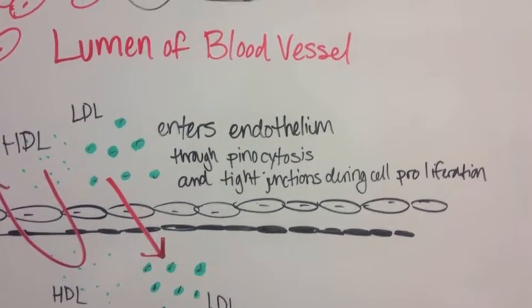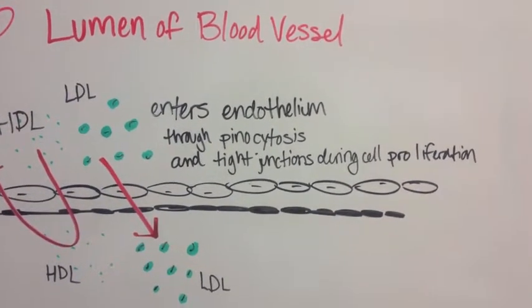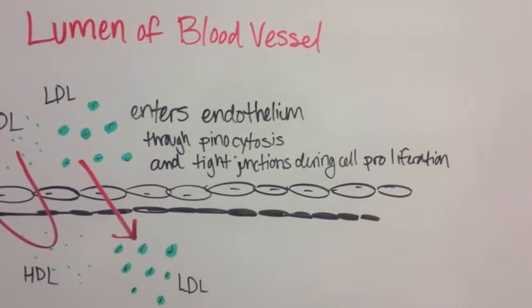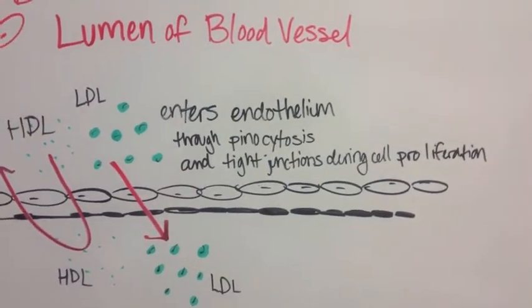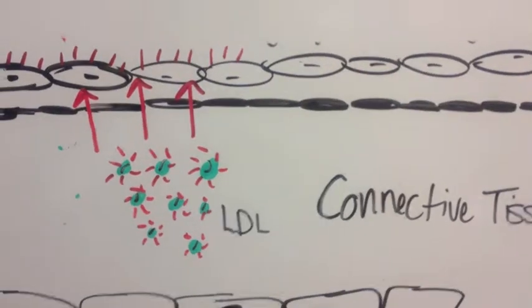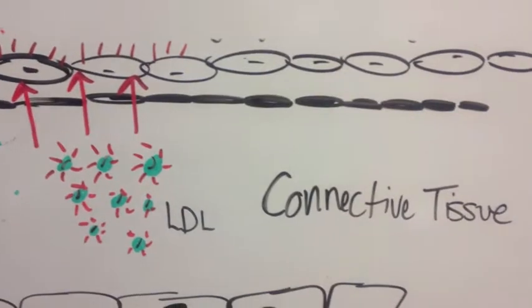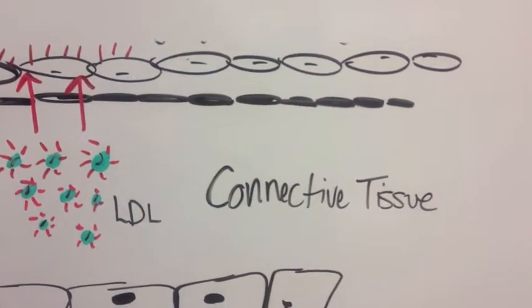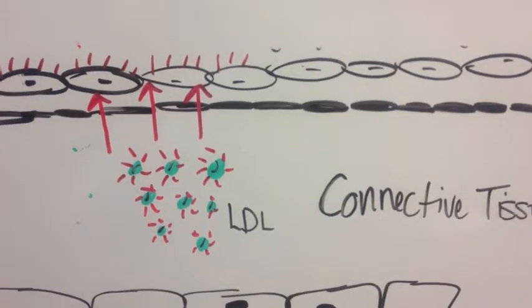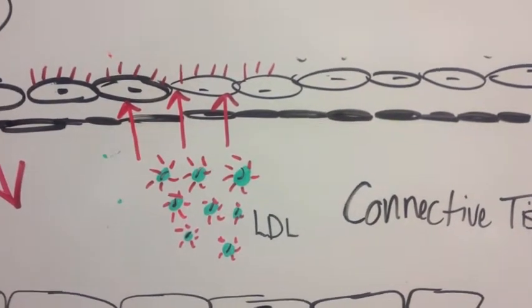LDL particles enter the endothelium through pinocytosis of the endothelial cells and through tight junction spaces when the endothelial cells are proliferating. The LDL particles have bound with the connective tissue and they become oxidized and then send signals to the endothelial cells which release adhesion molecules to call in monocytes to move into the intima of the blood vessel.